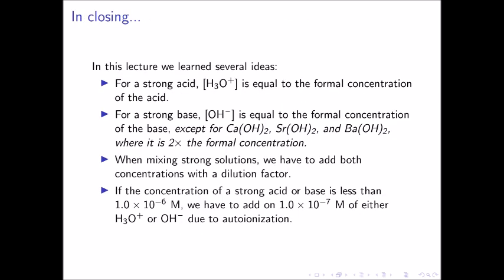This concludes the lecture for strong acid and strong base systems. The important ideas covered are: one, for a strong acid, the hydronium ion concentration is equal to the formal concentration of the acid. Two, for a strong base, the hydroxide ion concentration is equal to the formal concentration of the base, except for calcium hydroxide, strontium hydroxide, and barium hydroxide — in these cases, it is two times the formal concentration. Third, when mixing strong solutions, we have to add both concentrations with the appropriate dilution factor. And finally, if the concentration of a strong acid or base is less than 1 times 10 to the negative 6 molar, we have to add on 1.0 times 10 to the negative 7 molar of either hydronium or hydroxide ion due to autoionization of water. In the next video, we will see how to calculate the pH of weak acid and weak base solutions.